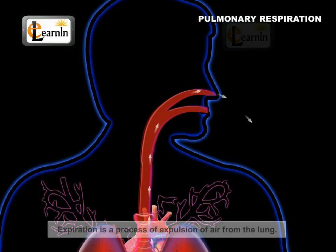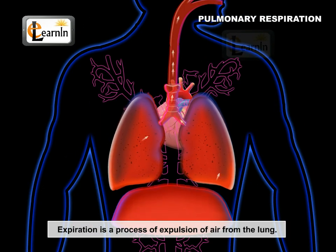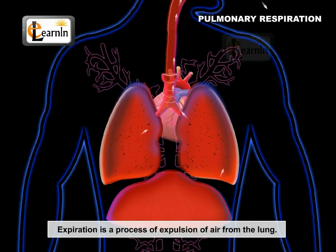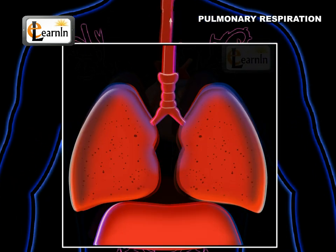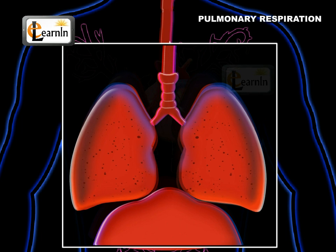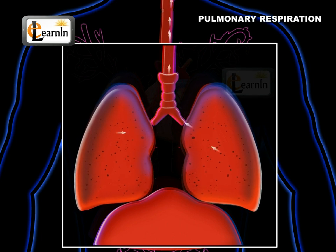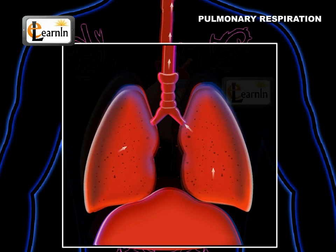Expiration is the process of expulsion of air from the lung. In this process, the internal intercostal muscles contract and the diaphragm returns to its original dome shape, and the space inside the thoracic cavity decreases, so the lungs are compressed and air is expelled out.